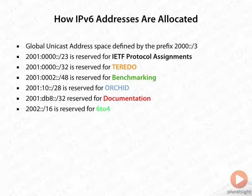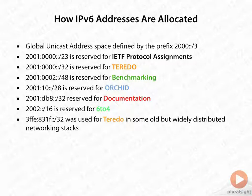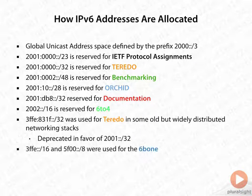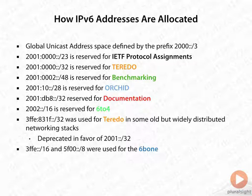The next address space allocated is 2002::/16, which is reserved for 6-to-4 tunneling. We also had 3FFE:831F::/32, which was used for Teredo but not widely distributed in network stacks, so it was deprecated in favor of 2001::/32. And then we had what was called the 6bone, which used the address space 3FFE/16 as well as 5F00/8, but the 6bone is no longer.